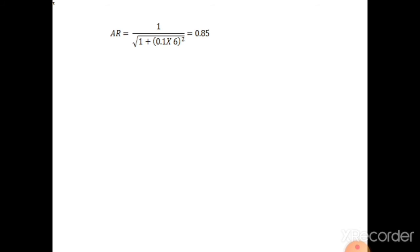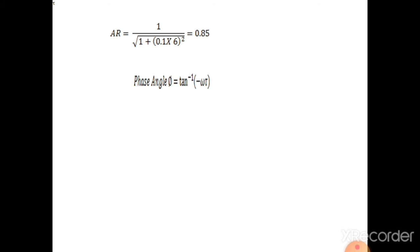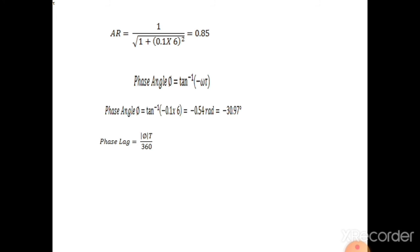Next, we calculate the phase lag. The phase angle equals tan⁻¹(−ωτ), where ω = 0.1 and τ = 6 seconds. Using this, the phase angle is calculated as −30.97 degrees. The phase angle is given in degrees; to convert to seconds for the phase lag, we use: phase lag = |φ| × T / 360, which gives a phase lag of 5.16 seconds.